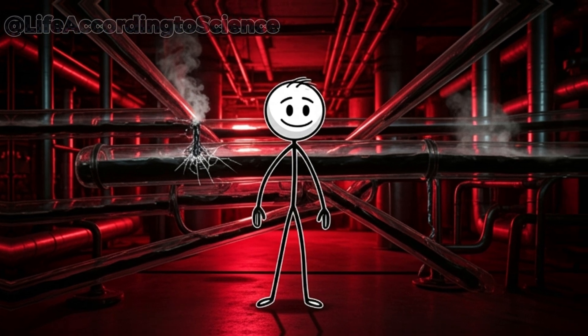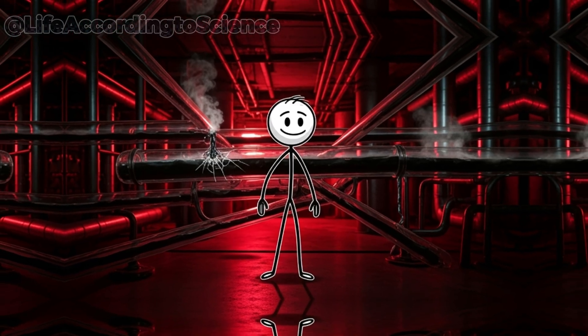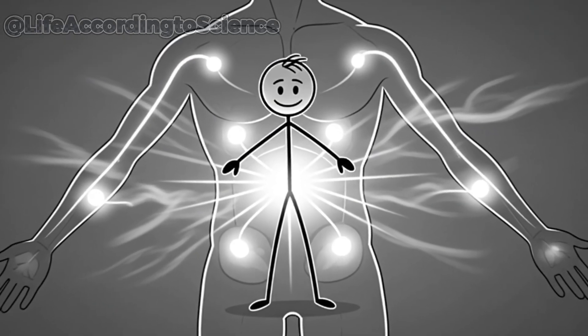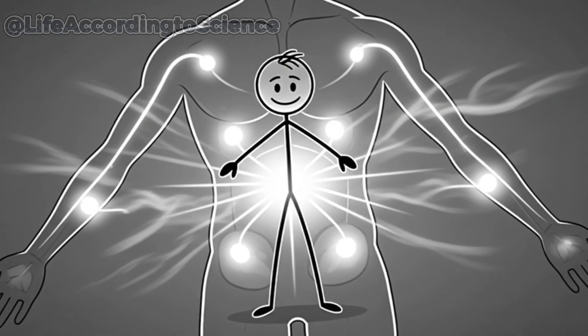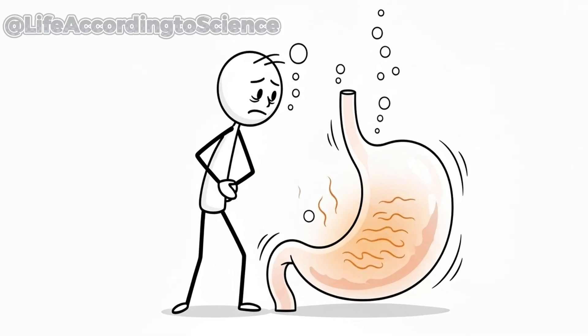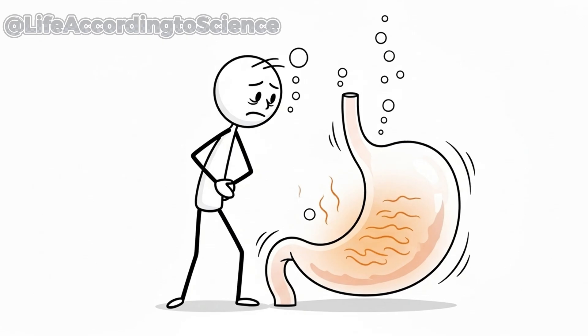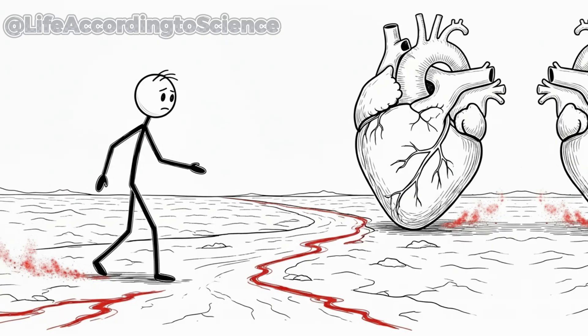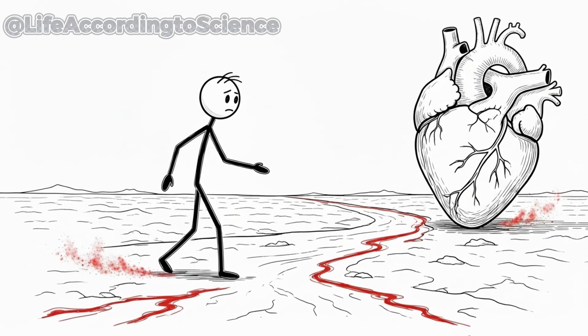Meanwhile, your body sacrifices blood flow to less critical areas, like your skin and digestive system, to keep vital organs alive. You might feel cold extremities and even nausea. Your stomach slows digestion to conserve water, creating discomfort and bloating. By the end of day four, your heart is fighting a losing battle to keep circulation stable. The drought inside your body is only deepening.